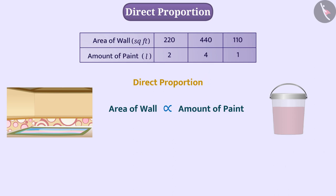Yes, we need the quantity of color according to the area of the wall. That is, the ratio by which the area will increase or decrease, the amount of color will also increase or decrease by the same ratio. Therefore, the area of the wall and the required amount of paint are also directly proportional.